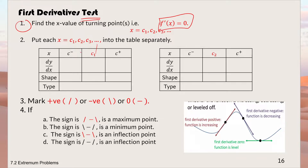After letting f'(x) = 0 and finding x, you put this value into a table and label the values to the left and right. You then calculate dy/dx at those test values, determine the shape of the slope, and identify whether the point is a maximum, minimum, or inflection. Don't worry — we are going to learn this by example.